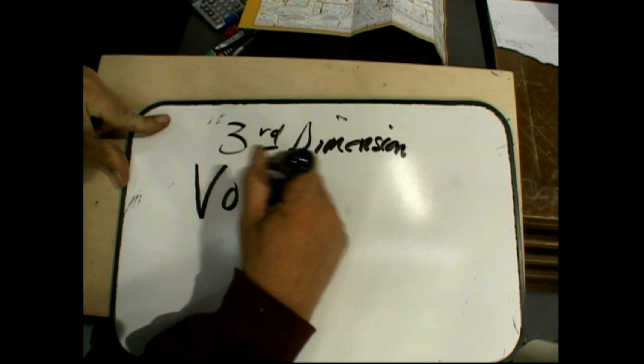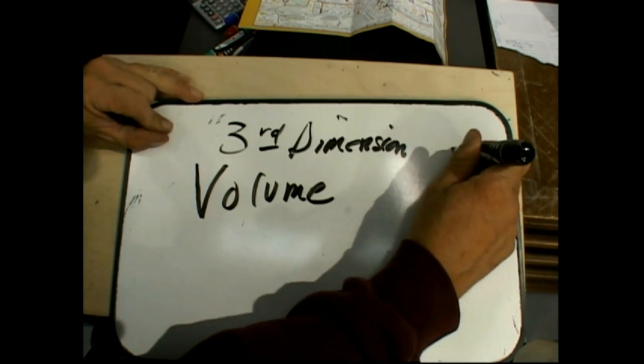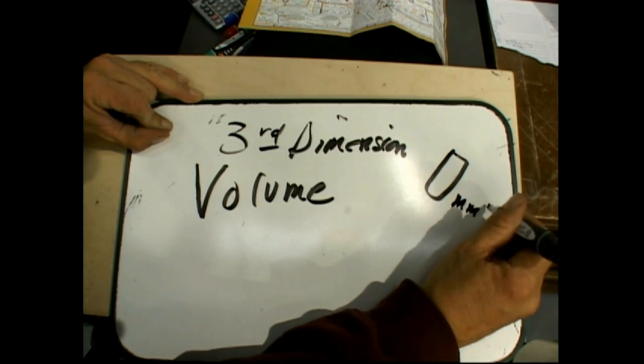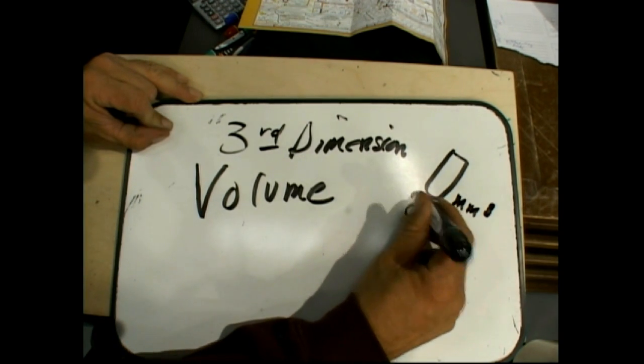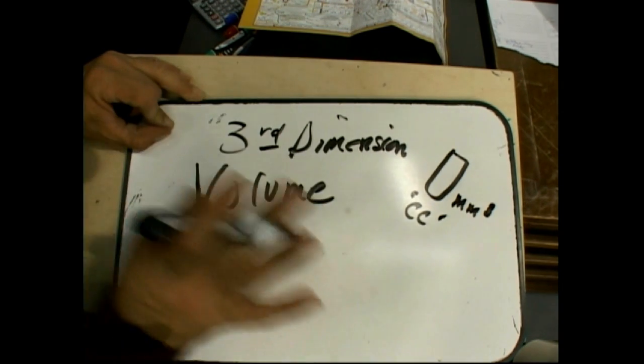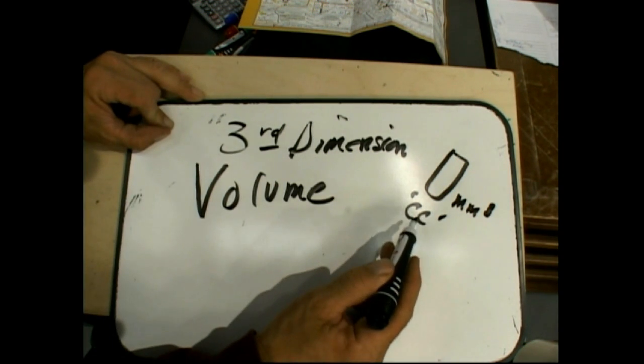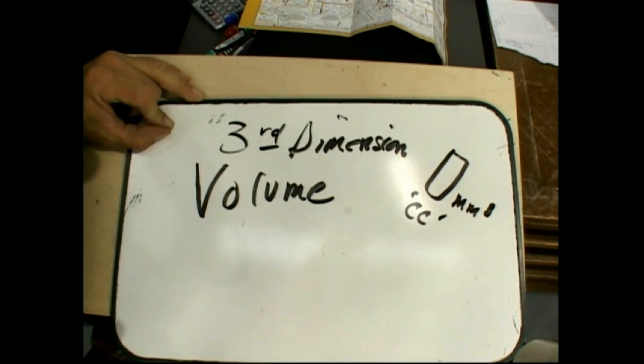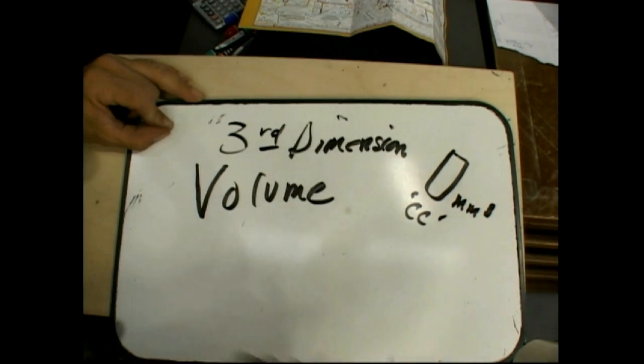Third dimension. Volume. Now the volume, if you have something, this dimension is going to be in millimeters cubed. Now what they'll do is they'll call that a CC. It's really, it's hard to explain, but a cubic centimeter is the same as a millimeter cubed. So for volume, that's your third dimension.